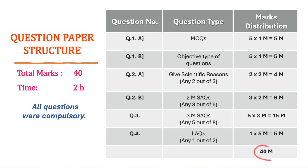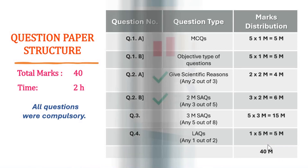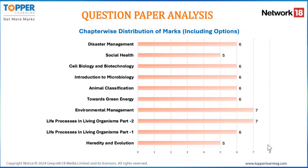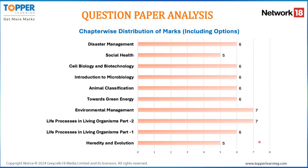So all in all, the paper was of 40 marks and the time allotted to solve this paper was two hours. Let's now analyze the paper. We will first take a look at the chapter-wise distribution of marks. You can see that the mark distribution is very uniform throughout the chapters. However, two chapters scored the highest marks — seven marks each — which were from the chapters on environmental management and life processes in living organisms part two.